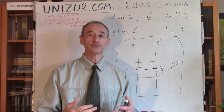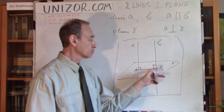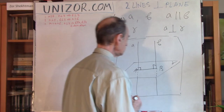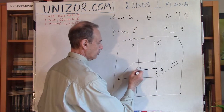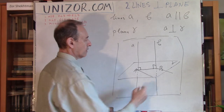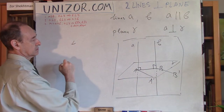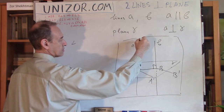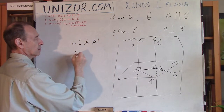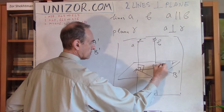That's one perpendicular line found. Remember, it is sufficient to prove perpendicularity of line B to the plane gamma by showing perpendicularity to two lines on gamma through point B. We found one. For another, let's draw two parallel lines through A and B — call them A' and B'. Let's compare angle C, A, A' and angle D, B, B'.